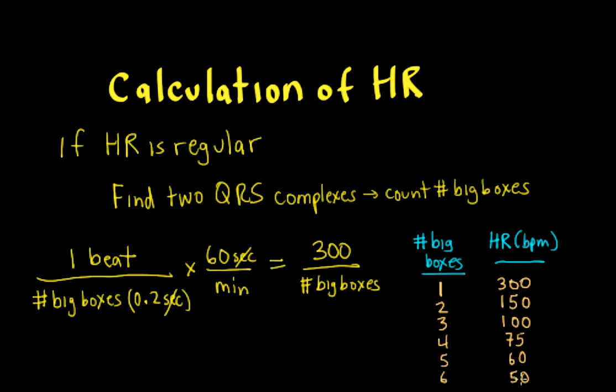Six big boxes would be 50. So if big boxes were more than seven, then we'd be less than 50 beats per minute. You see this pattern: 300, 150, 100, 75, 60, and 50.